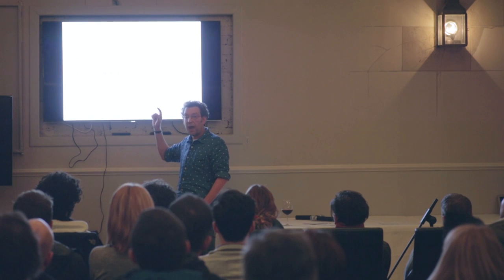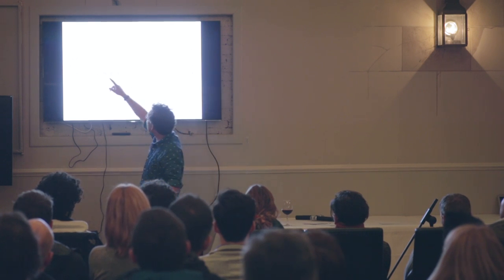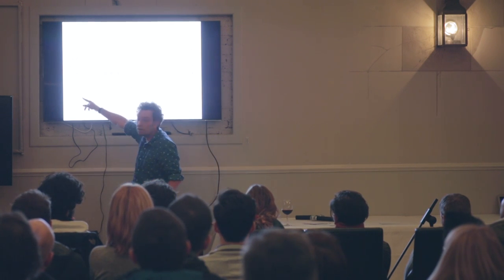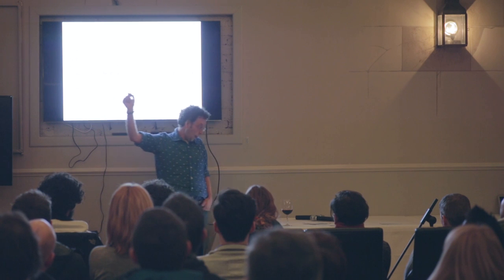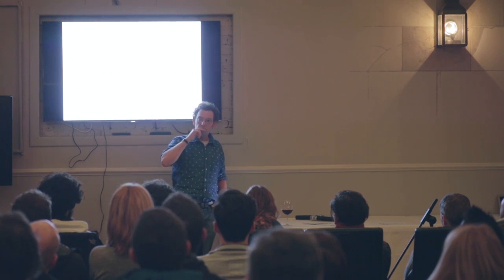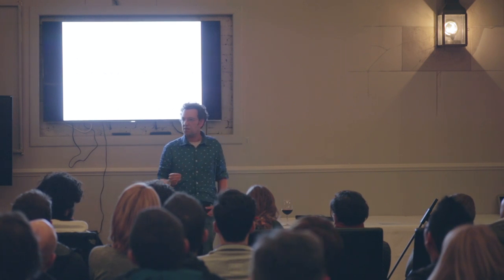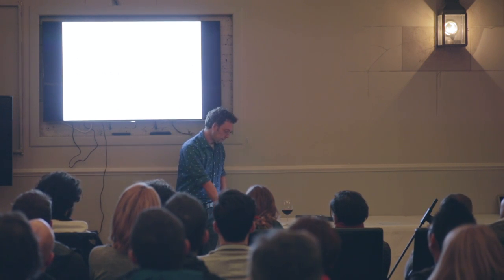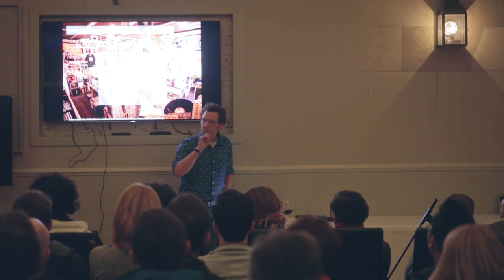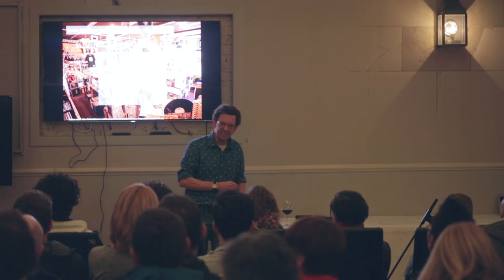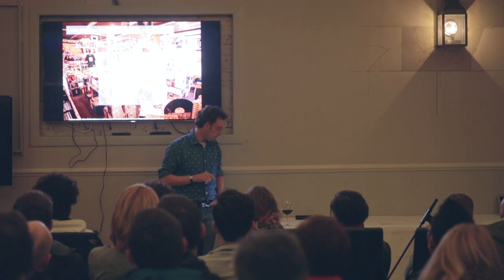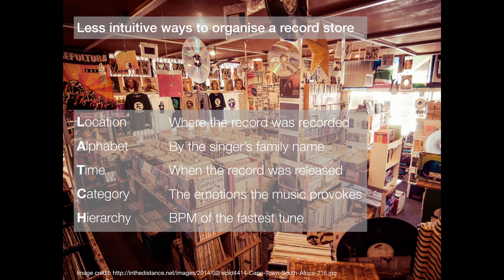I'm going to buy a drink for anybody who can tell me what the category is shown in green here. I admire your guess - I was really hoping somebody would say alkaline earth metals. Now you know everything there is to know about information architecture. You know the five ways to organise stuff.